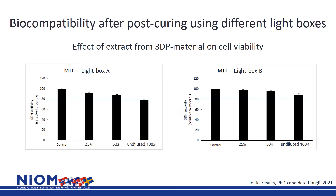We have looked at the biocompatibility of a dental material after post-curing using different light boxes or light chambers. Looking at the cell viability of undiluted extracts from the printed material, post-curing in light box A results below the line drawn at 80% viability. On the other hand, post-curing in light box B gives a result above the 80% viability line, approaching 90%. We can speculate that this is due to a higher degree of conversion and therefore less residual monomer when using light box B. Ongoing studies at NIOM will evaluate this further.